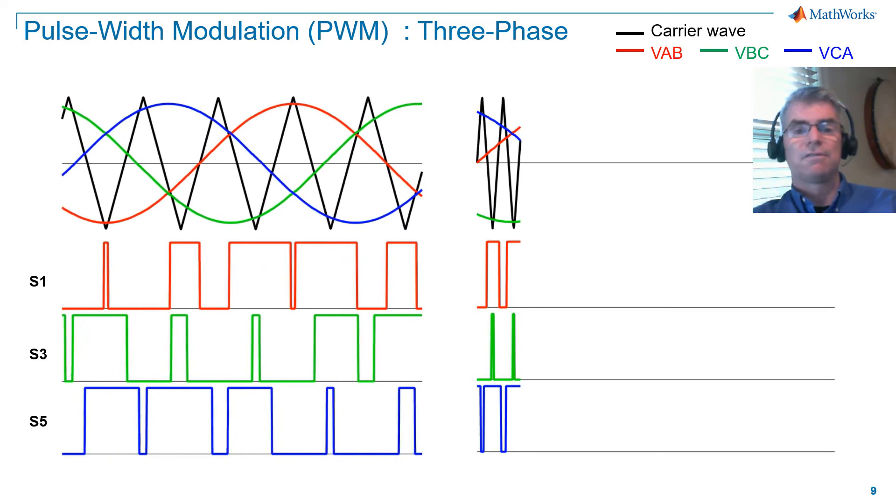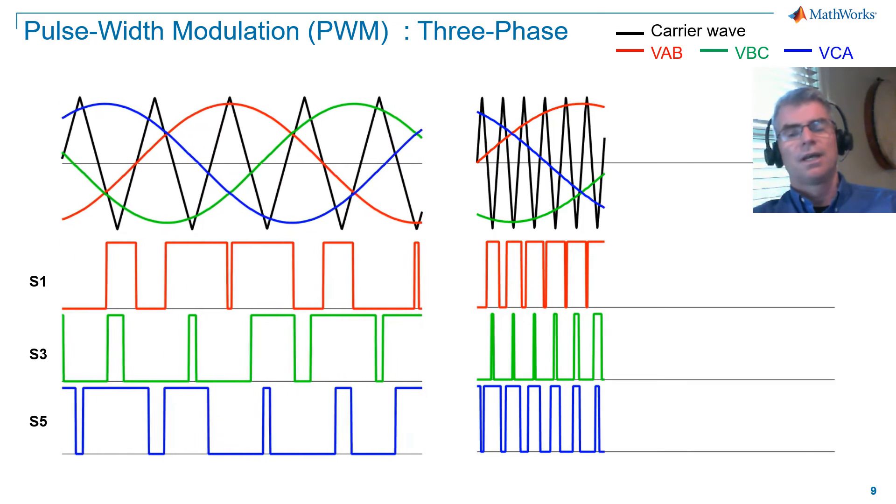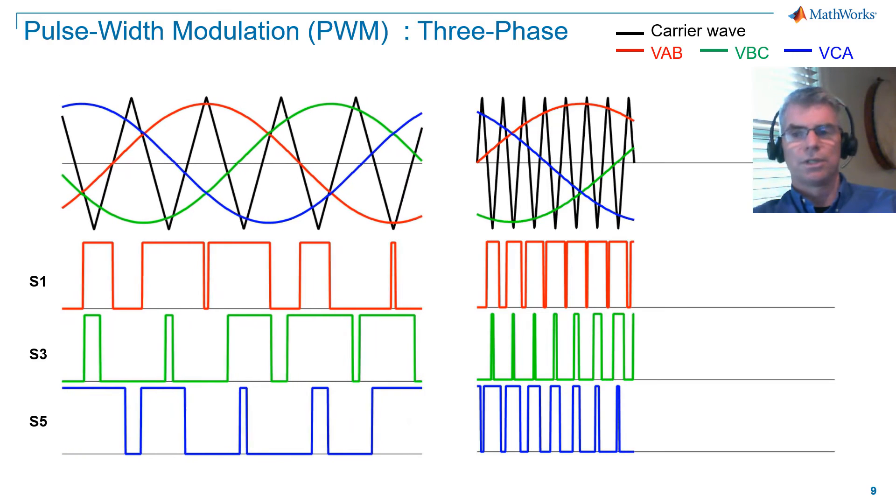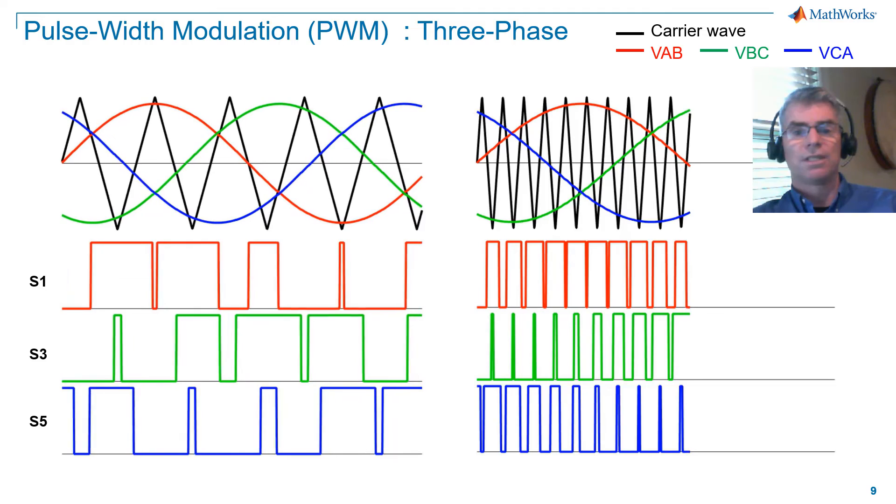On the right, you can see the effect of increasing the carrier frequency by a factor of 4. As I noted before, higher carrier frequencies are more desirable, as they provide more resolution in the encoding of the sinusoids.